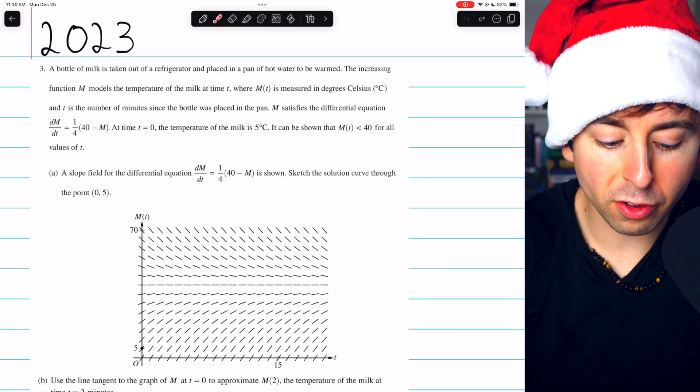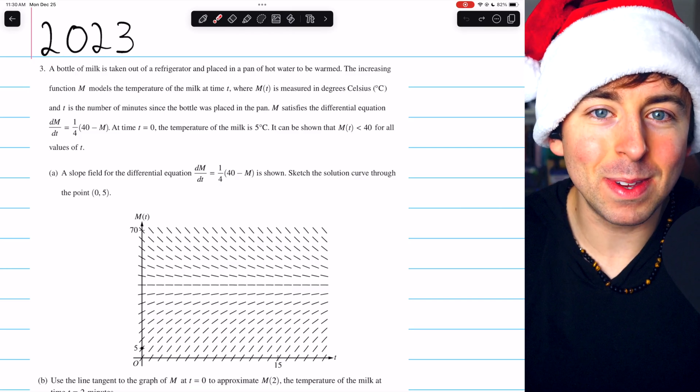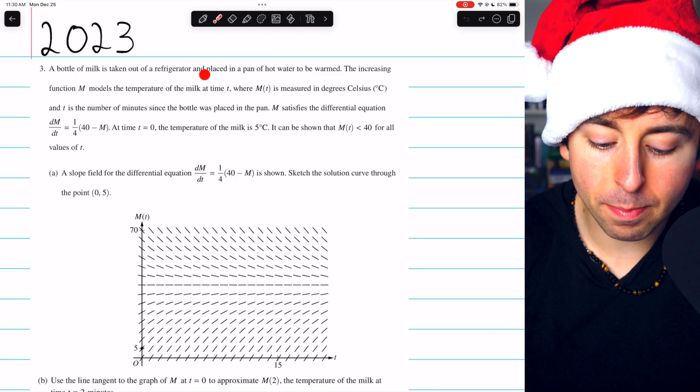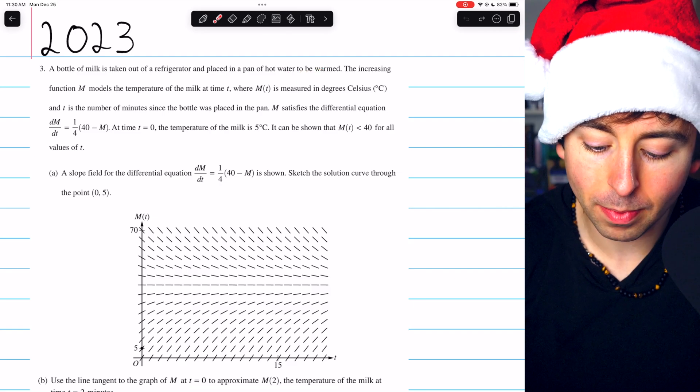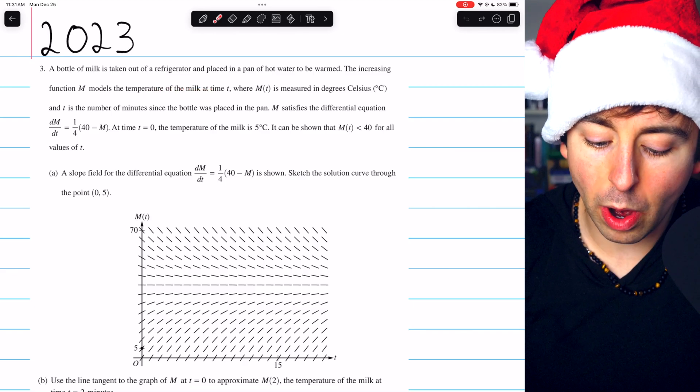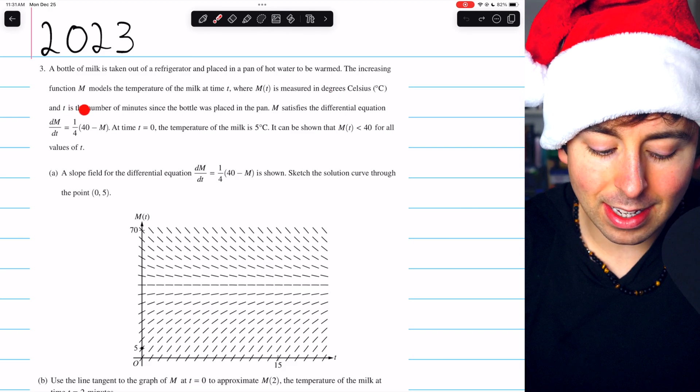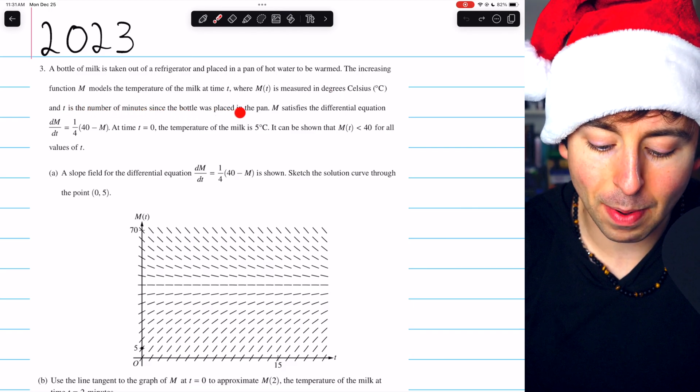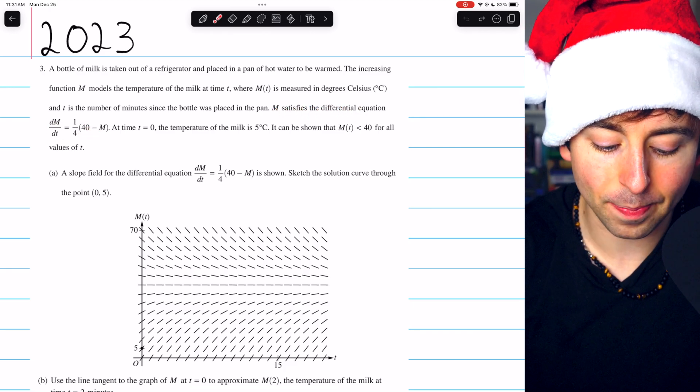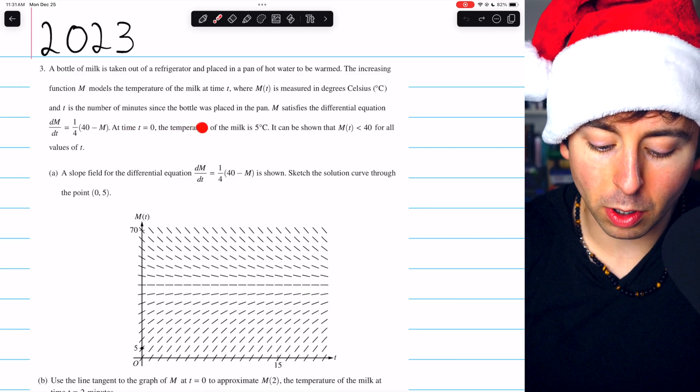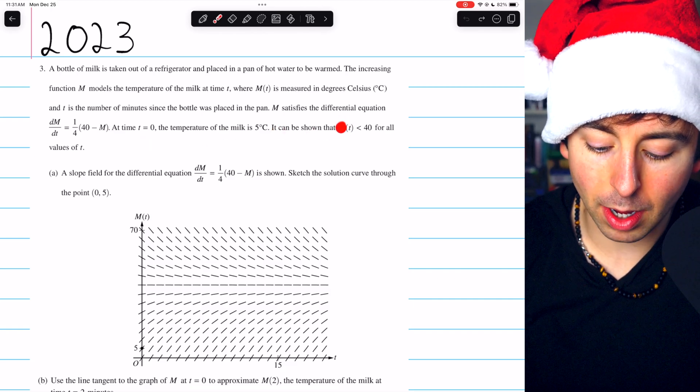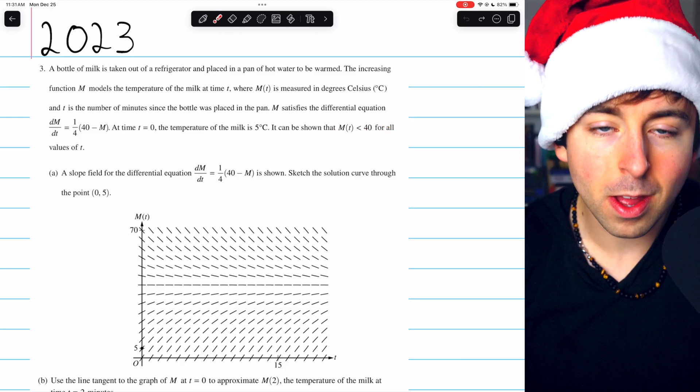This is free response question three from the 2023 AP Calc AB exam. A bottle of milk is taken out of a refrigerator and placed in a pan of hot water to be warmed. The increasing function M models the temperature of the milk at time T, where M(T) is measured in degrees Celsius, and T is the number of minutes since the bottle was placed in the pan. M satisfies the differential equation dM/dt equals one-fourth times (40 minus M). At time T equals zero, the temperature of the milk is 5 degrees Celsius. It can be shown that M(T) is less than 40 for all values of T.